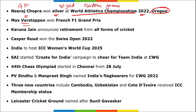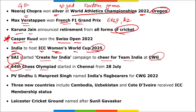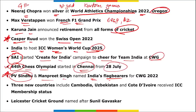Max Verstappen won the Emilia Romagna Grand Prix, the Azerbaijan Grand Prix, and the French F1 Grand Prix. Karuna Jain announced retirement from all forms of cricket. Casper Rudd won the Swiss Open 2022. India will host the ICC Women's World Cup 2025. The 44th Chess Olympiad is being held in Chennai, Tamil Nadu from July 28th. PV Sindhu and Manpreet Singh have been named India's flag bearers for the Commonwealth Games 2022.